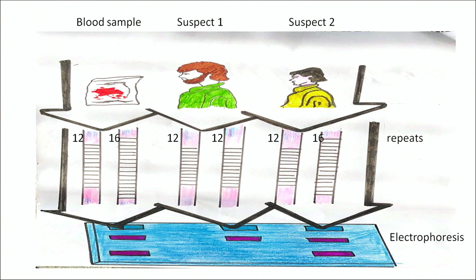We have also shown some repeat sequences. In the crime scene sample, there are 12 repeat sequences and 16 repeat sequences. In suspect 1, there are only 12 and 12 repeat sequences. In the case of the actual person who committed the crime, the DNA has 12 repeat sequences and 16 repeat sequences — matching exactly what was obtained at the place of crime.